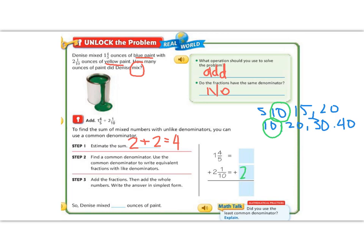So 2 and 1/10 stays the same, and we need to change our first number. We're going to change a 5 into a 10. In order to change a 5 into a 10, we have to multiply by 2. And whatever we do to the bottom, we have to do to the top. So 4 times 2 is 8.